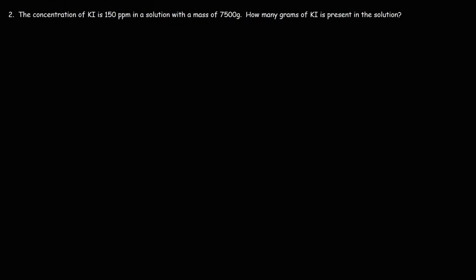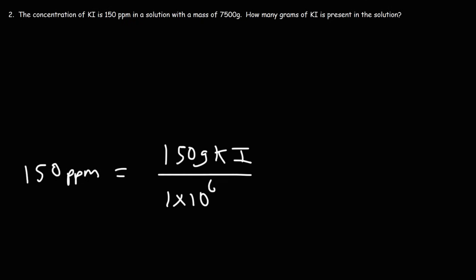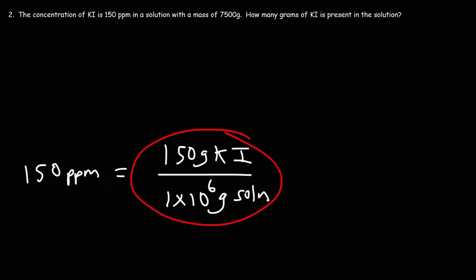The concentration of potassium iodide is 150 parts per million in a solution with a mass of 7,500 grams. How many grams of KI is present in the solution? It's helpful to represent the concentration in ppm in terms of grams of solute relative to grams of solution. So 150 ppm means there are 150 grams of potassium iodide for every 10 to the 6 grams of solution. Expressing ppm this way makes it easier to solve using unit conversion.